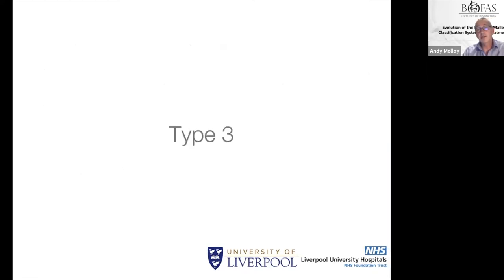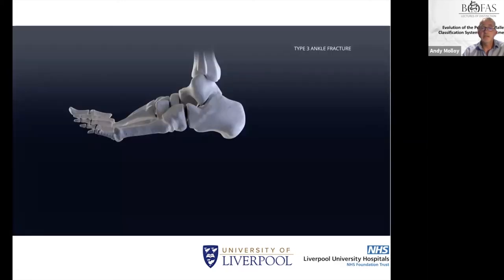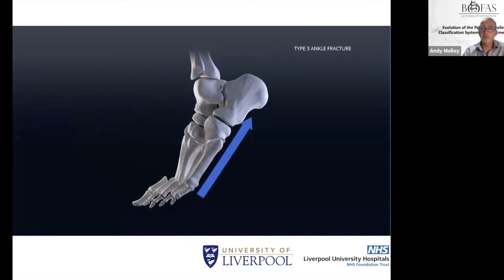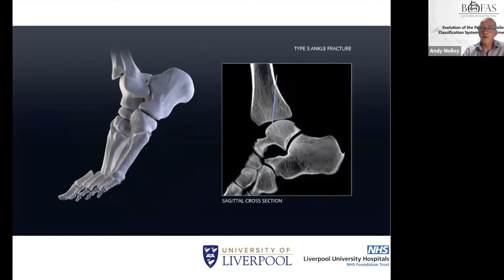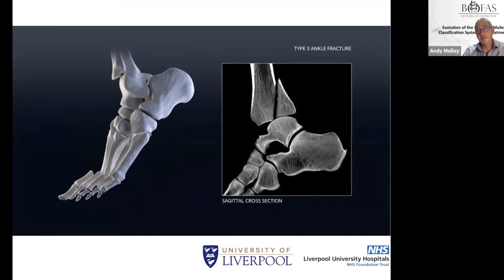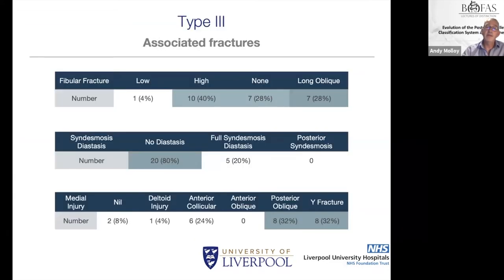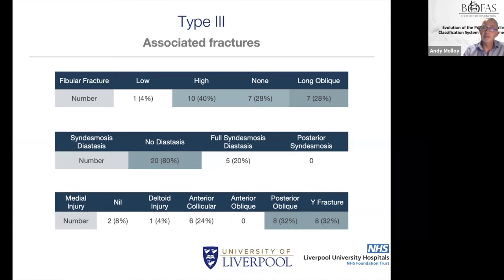The type 3 is your true posterior pylon. This occurs with a plantar-flexed foot under axial loading, causing a shear force that shears off a large chunk of the posterior plafond with displacement, and there is a high chance of chondral injury. The syndesmosis was stable the majority of the time, but the majority had a medial malleolar fracture — tending towards more complicated types — and CT is really necessary to determine what metalwork to use.